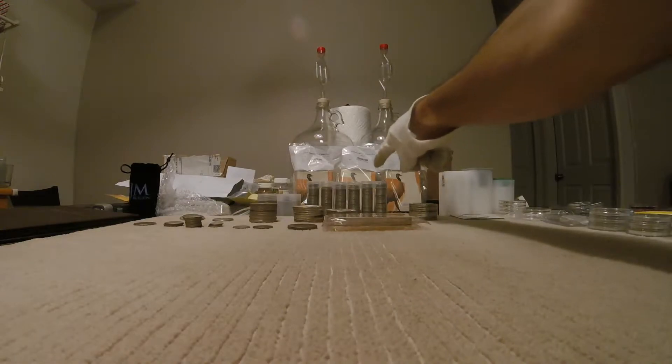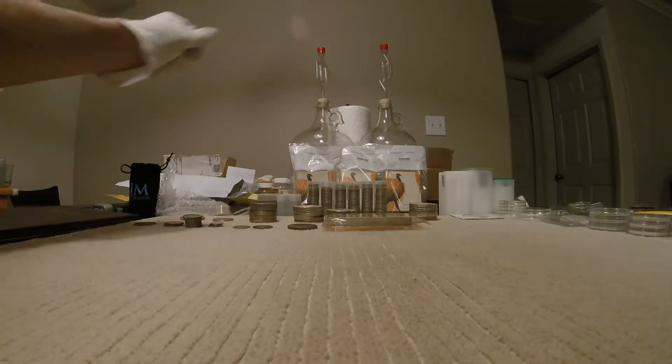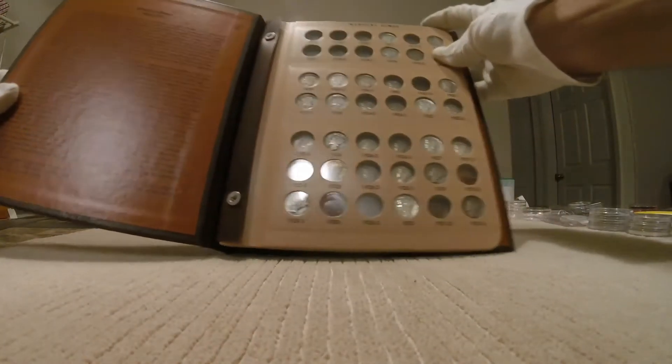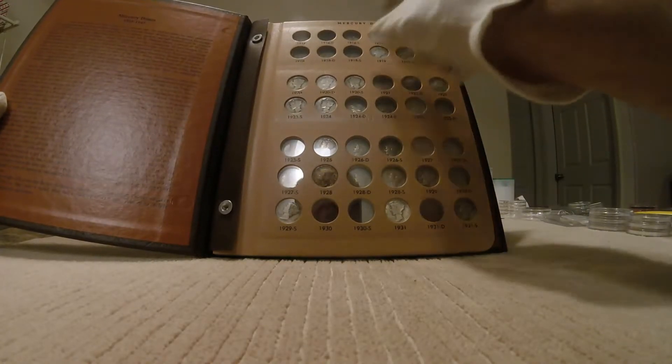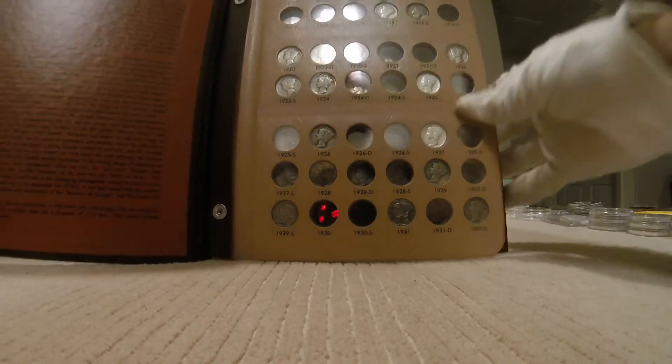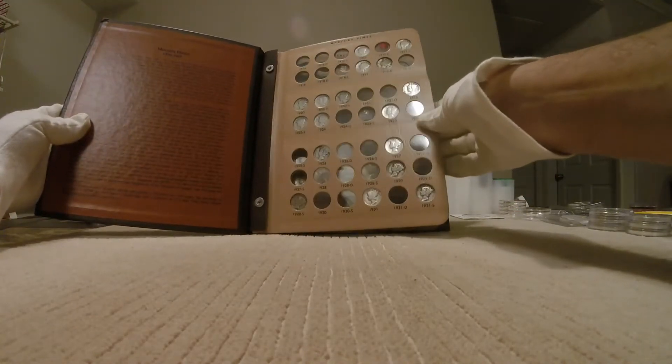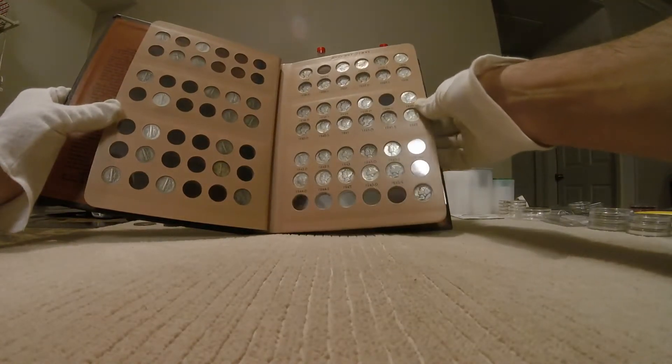Now, moving on to the dimes. I picked up 362 or 36.2 dollars face. And those, I started putting, those are mostly Mercury dimes that I picked up at SD Bullion. So I started putting them in here. There's something in pretty good condition that I already had. Here's a 1917 that's in decent condition.